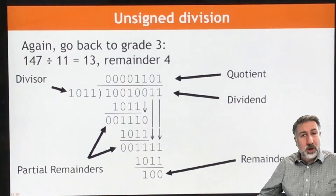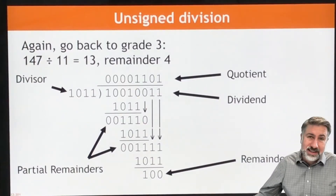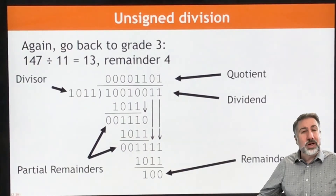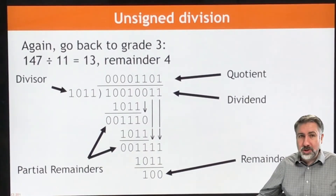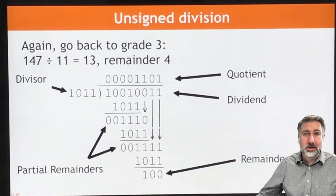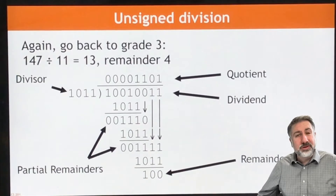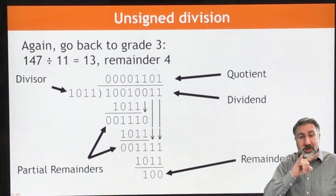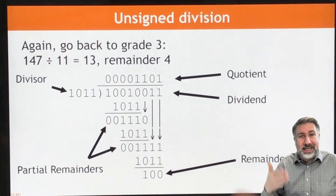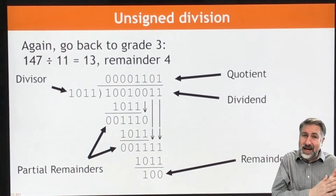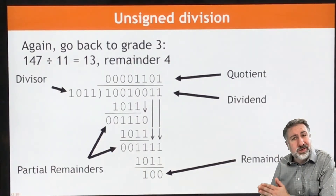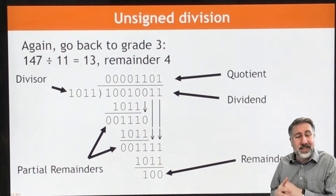We've been talking about multiplication using unsigned and signed numbers in a sequential device that allows us to produce a combinational result. The multiplication result is combinational, but we're using sequential logic to build it because it is large and complicated and there's too many results to just list them all. We're going to do the same thing with division. With multiplication, we take two numbers and add them together over and over again until we get the result. With division, we're doing it backwards — we're going to be subtracting instead of adding, and checking our result to see if we subtracted too much and then adding the result back again.